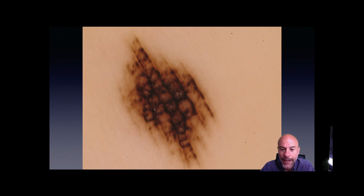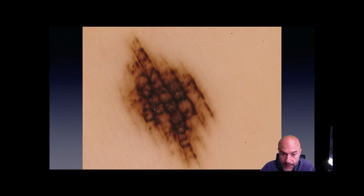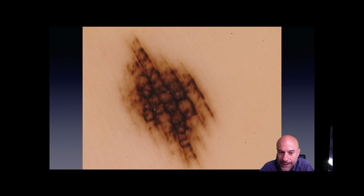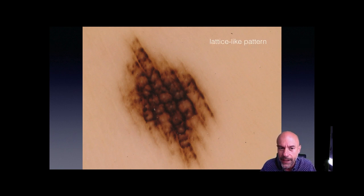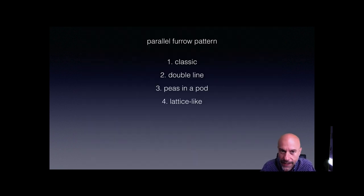In the next image, we can see again a parallel furrow pattern — the pigmented lines are located on the furrows, not a ridge pattern. But in addition, especially in the central part, there are perpendicular vertical lines crossing the ridge. It is not a diffuse pigmentation of the ridge — only vertical lines crossing it. So we have parallel furrow lines and also vertical lines crossing the ridge and furrow, creating a kind of network. In this location, we call it the lattice-like pattern, which is the last variation of the parallel furrow pattern.